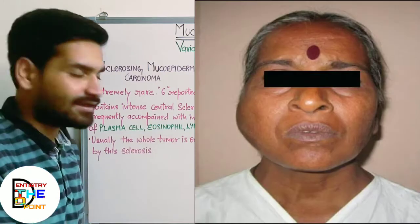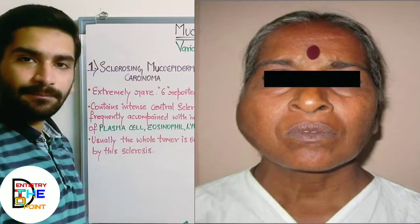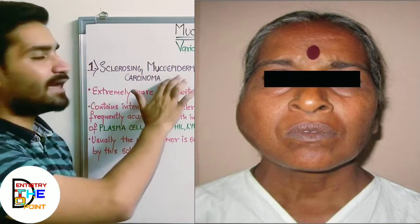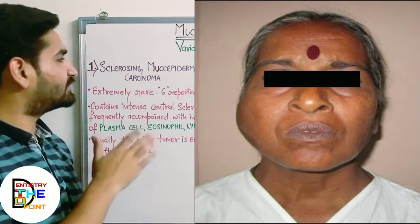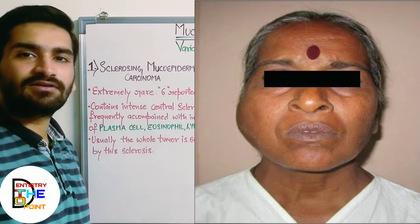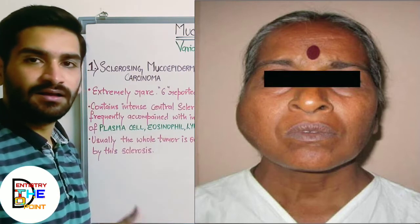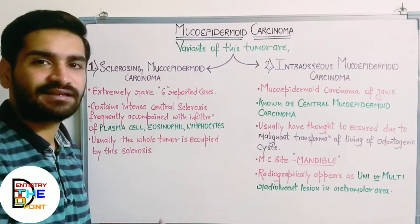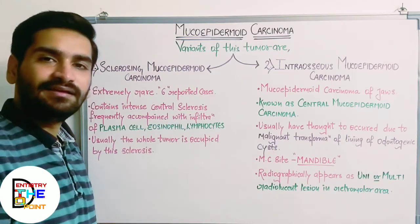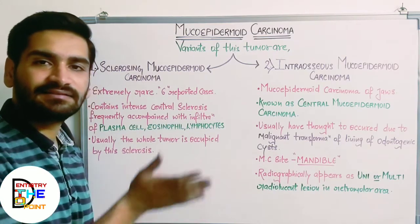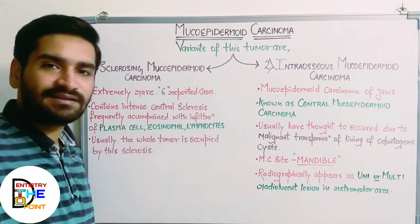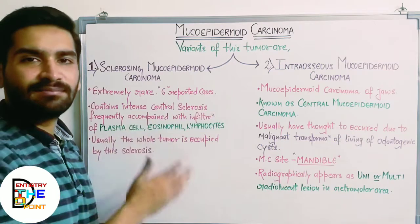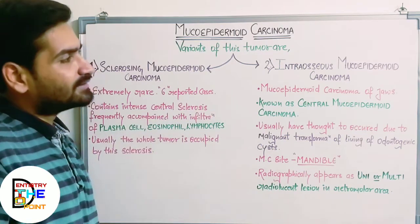The whole tumor is usually occupied by this sclerosis, which creates quite significant difficulties in diagnosing the histological sections. There is so much sclerosis seen in the histological section that you cannot identify the typical histological characteristics — that is, the mucus cells, epidermoid cells, and intermediate cells.